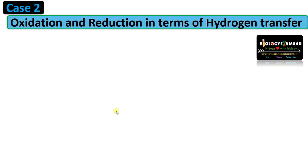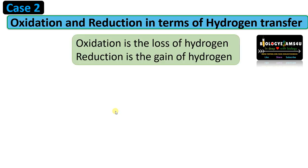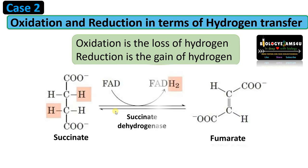Now case 2: oxidation and reduction in terms of hydrogen transfer. Oxidation is the loss of hydrogen, whereas reduction is the gain of hydrogen. Let us take an example — this is step 6 of the citric acid cycle, where succinate is oxidized to form fumarate.